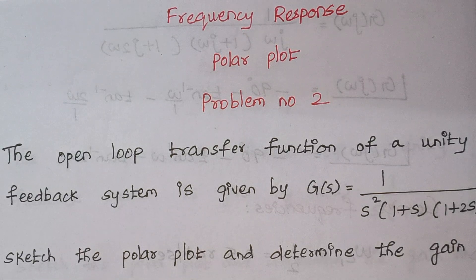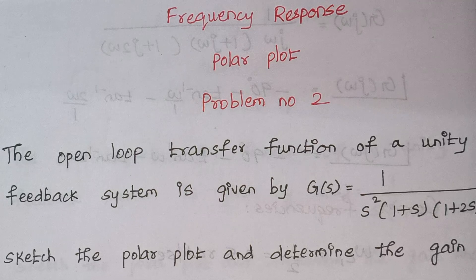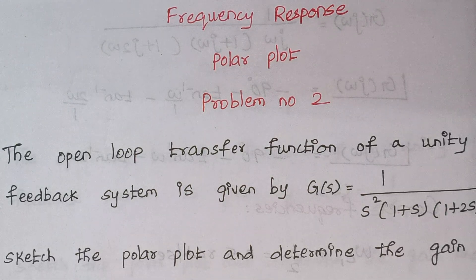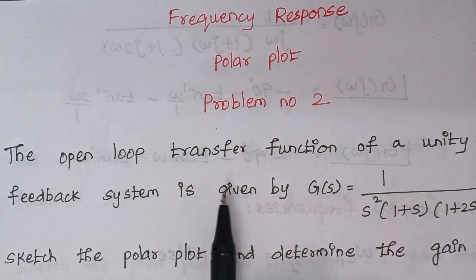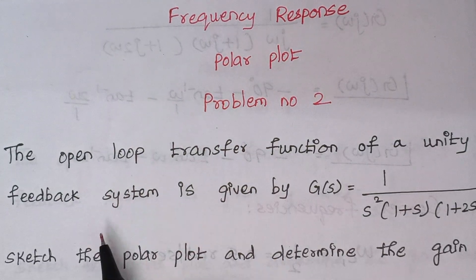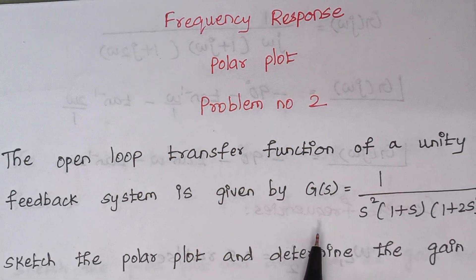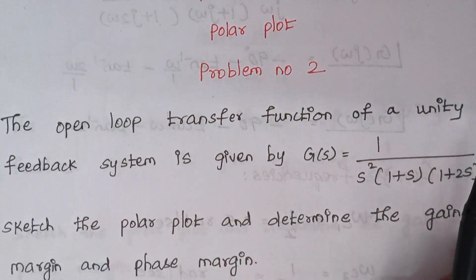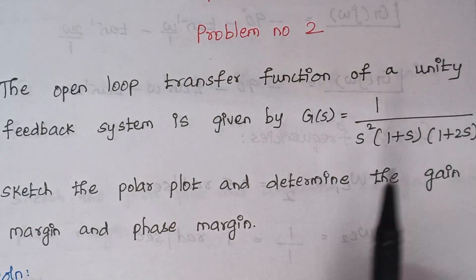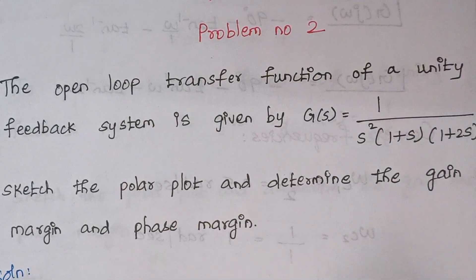Hello viewers, I am Kausalya. Today we are going to solve problem number 2 under the topic polar plot. The problem is: the open loop transfer function of a unity feedback system is given by this expression. Sketch the polar plot and determine the gain margin and phase margin.